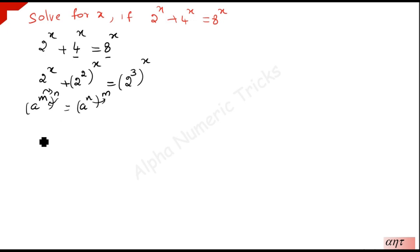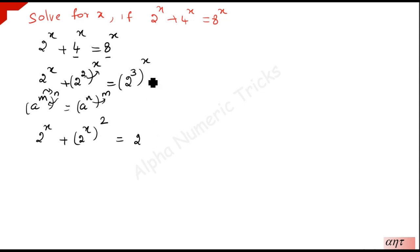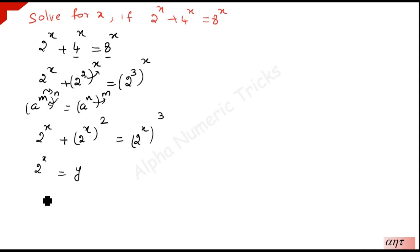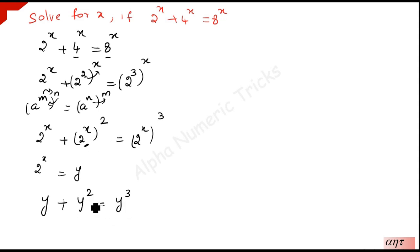Using this law, we can write: 2 to the power x, plus 2 to the power x whole squared, is equal to 2 to the power x whole cubed. Now we go for the substitution: let 2 to the power x equal y. Substituting, we get y plus y squared is equal to y cubed.